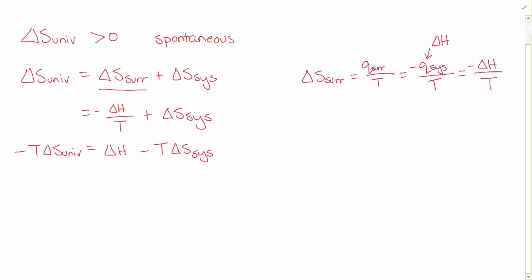We see now that we have a measure of spontaneity that relies only on values we can measure of our system: the heat flow at constant pressure or the enthalpy, and the entropy change of our system. We define this as a new state variable, which we call ΔG or Gibbs free energy. We can see that the change in Gibbs free energy is equal to the negative temperature times the change in entropy of the universe.